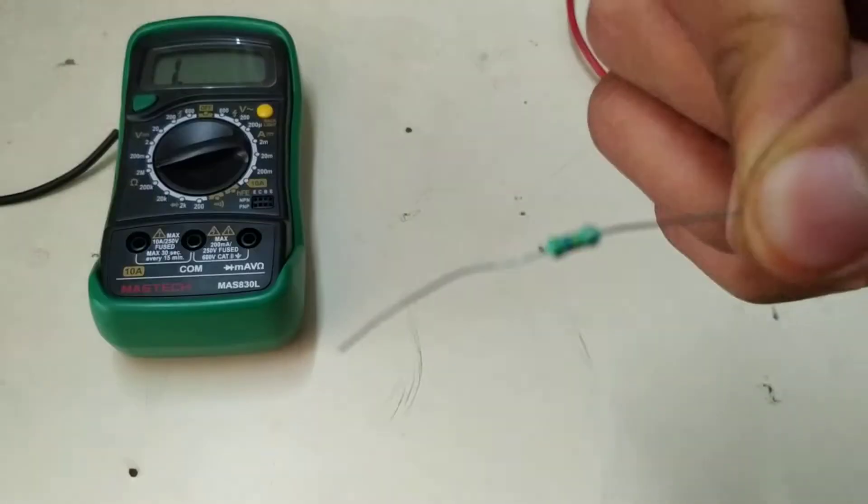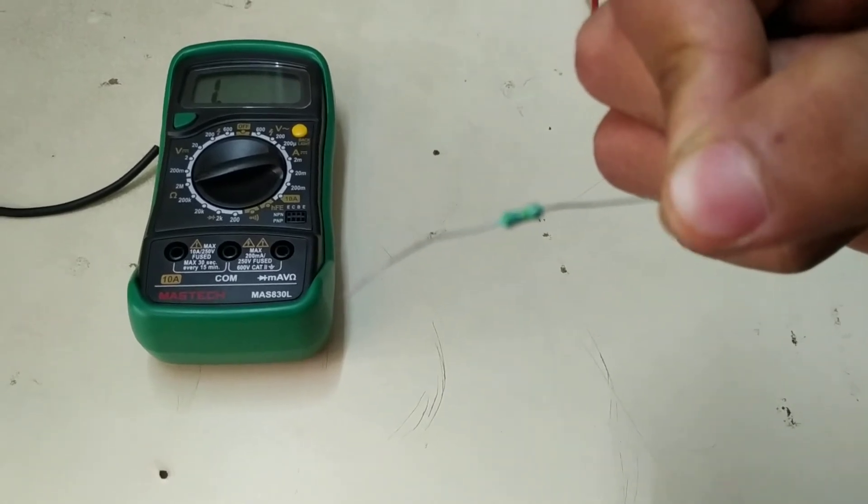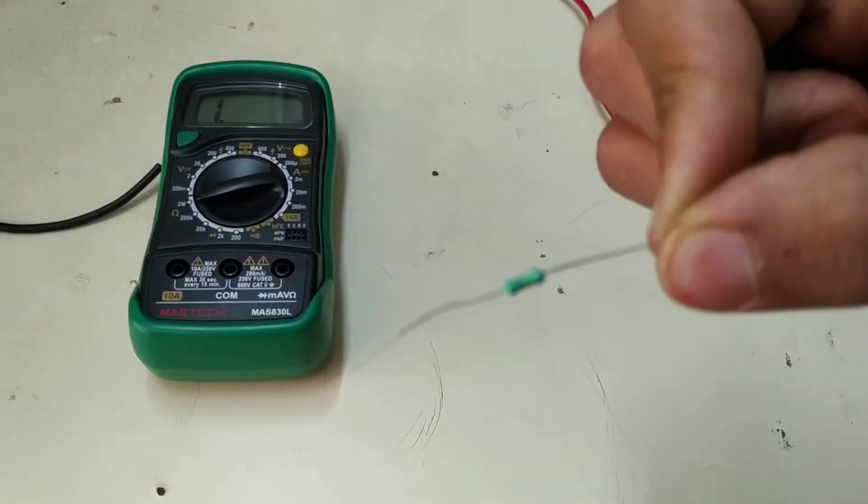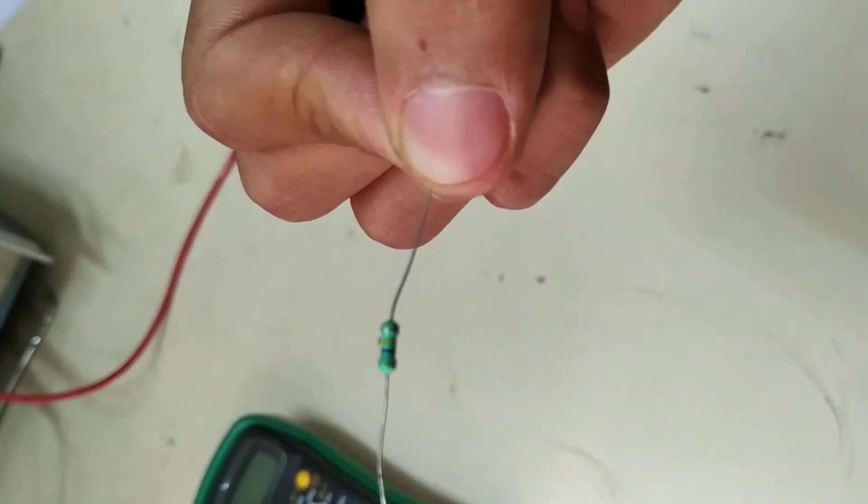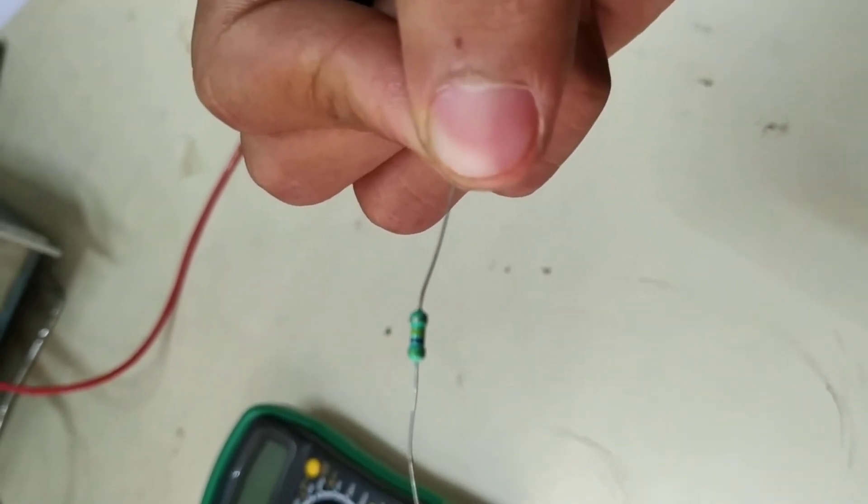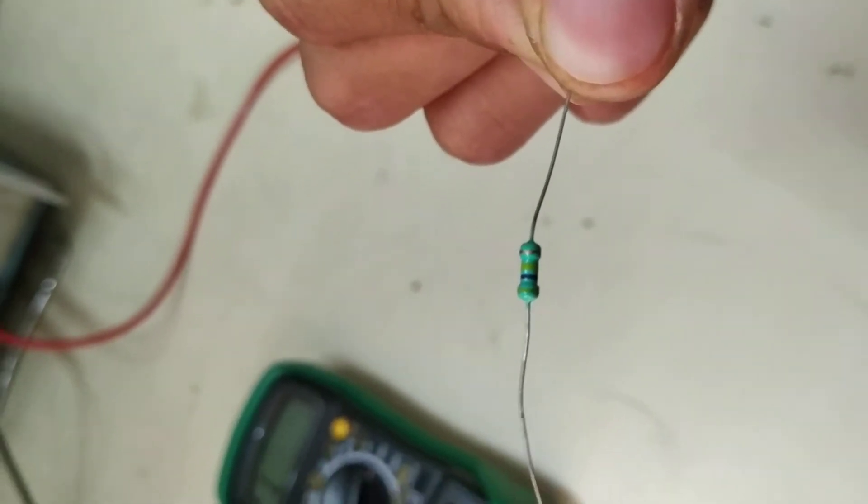Hello students, consider the practical on accuracy, the first practical. Let us take a resistor with a value of 470 kOhm. What is the color code?